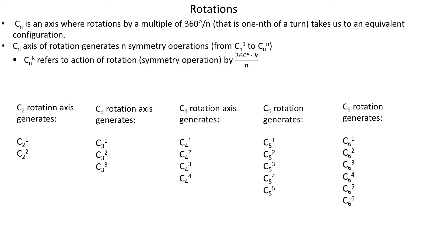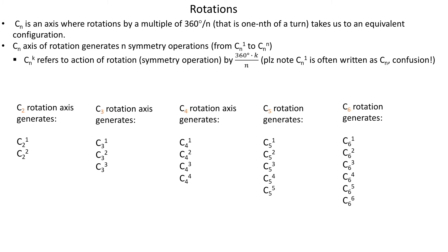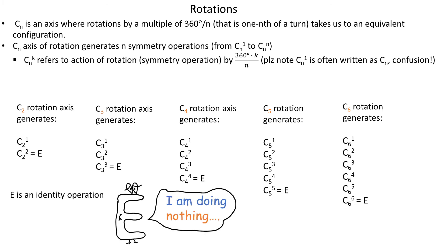There are three things to mention about rotations. First, CN¹ is often written as CN — the superscript 1 is dropped — which can sometimes be a source of confusion, as you need to know from context whether an author is talking about a symmetry operation or element. Second, CNN, which is the full 360-degree rotation, is treated separately — returning to the starting configuration is equal to another symmetry operation called the identity operation, with symbol E. We use E to indicate doing nothing or returning to the starting configuration.